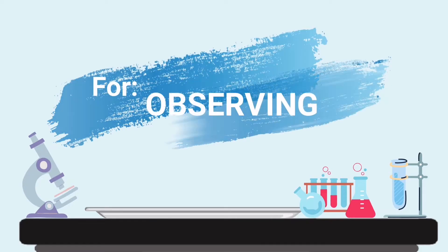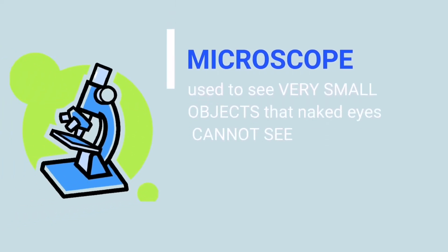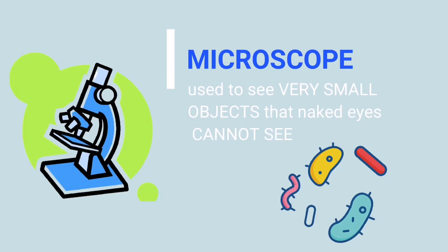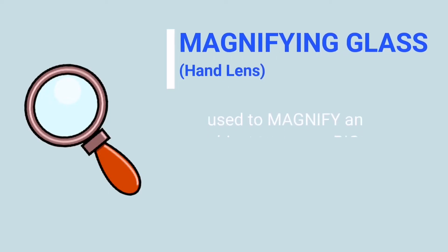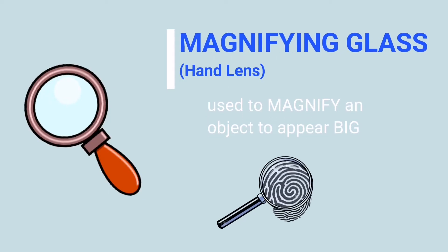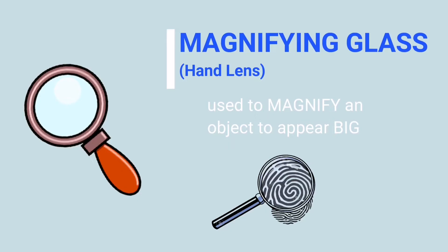Tools for observing. Microscope — it is used to see very small objects that naked eyes cannot see. Magnifying glass or hand lens — it is used to magnify an object to appear big.